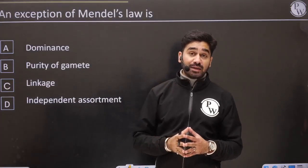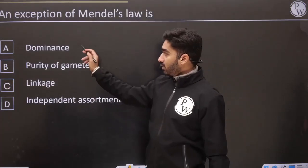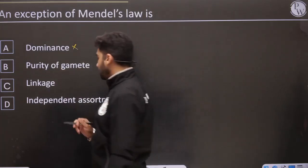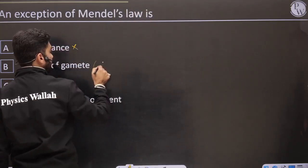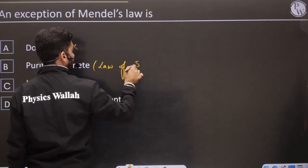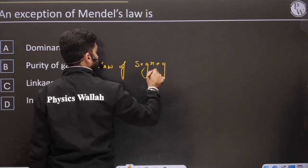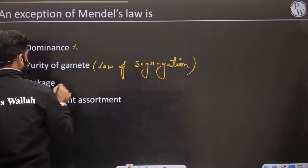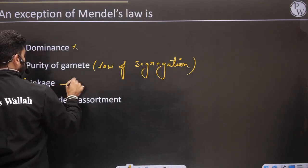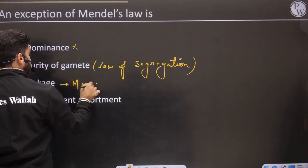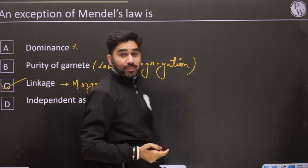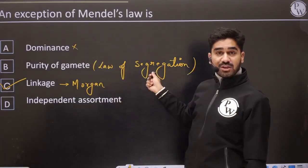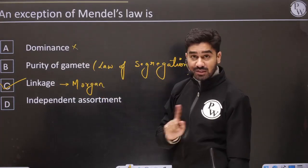Next: exception of Mendel's law. Law of dominance was given by Mendel, so that can't be an exception. Purity of gametes refers to the law of segregation. Linkage — the concept of linkage is Morgan's, not Mendel's. And the law of independent assortment was given by Mendel based on dihybrid crosses. So Mendel gave: law of dominance, law of segregation, and law of independent assortment.